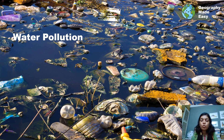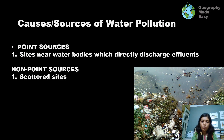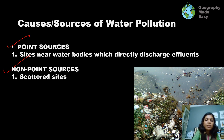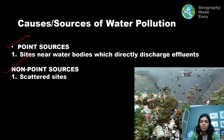Next we come to water pollution, one of the major kinds of pollution and something very worrying, so we need to discuss this in detail. What are the sources of water pollution? We can divide this into two: point sources and non-point sources. When pollution is concentrated at a particular point from which the pollutant enters the water, that is a point source. When there are many scattered sites through which pollution enters the water, those are non-point sources.